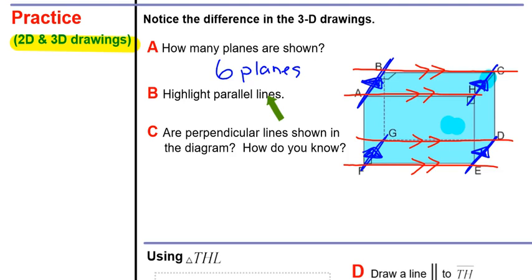There is actually a third set of parallel lines, though you don't have to draw them on your paper. They are the ones that go up and down. If I wanted to mark those, I could mark them all with three arrows.